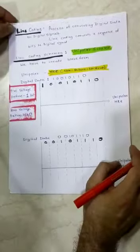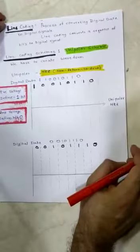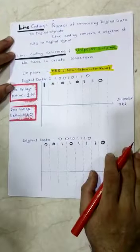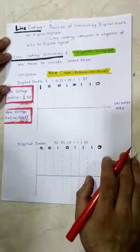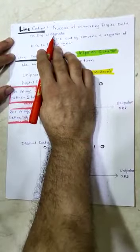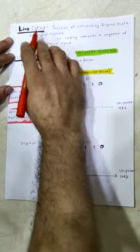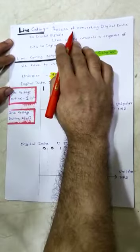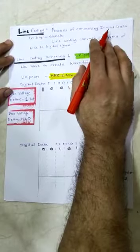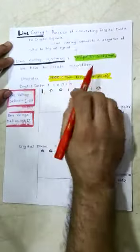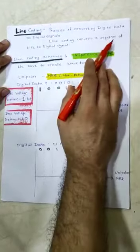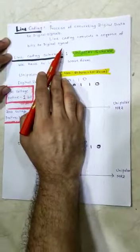Hello friends, today we are going to learn line coding scheme. Line coding scheme comes under data communication. While communicating data, we need to transmit digital data into digital signals. Line coding helps us in the process of converting digital data to digital signals. Line coding basically converts a sequence of bits to digital signals.